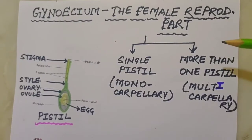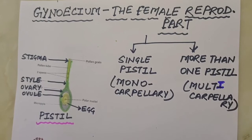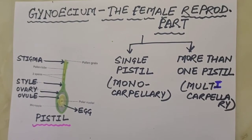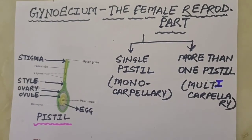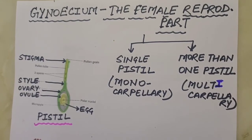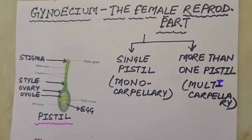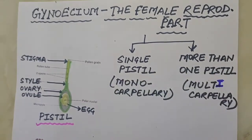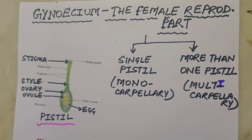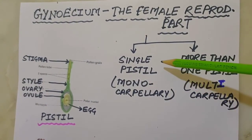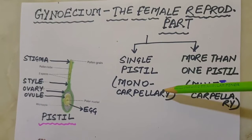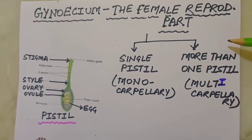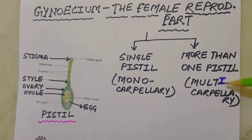In this part, we will discuss the female reproductive part of a flower, that is gynoecium. When we talk about gynoecium, the picture that comes to mind is of the pistil, because pistil is the female part of the flower. Gynoecium may consist of a single pistil, that is monocarpellary, or may have more than one pistil, that is multicarpellary.